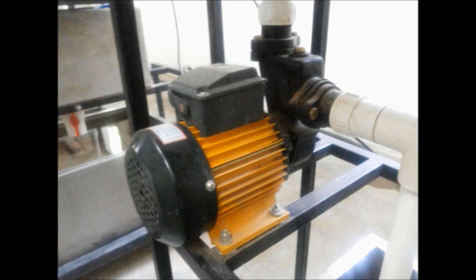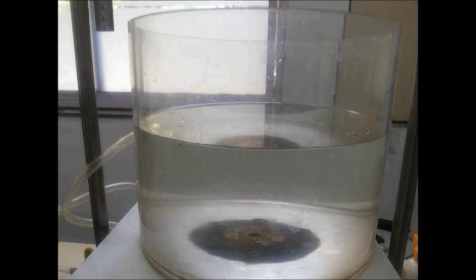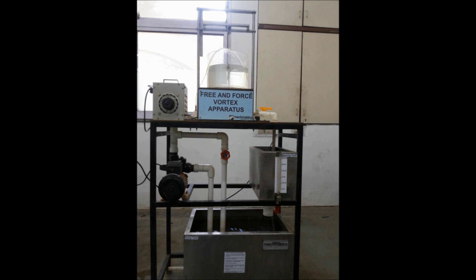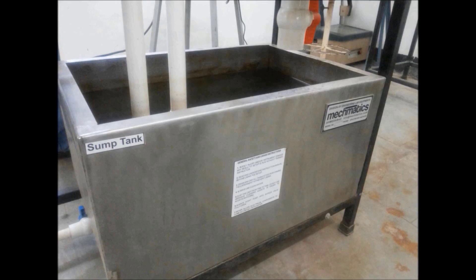Exit orifices of different sizes are provided which can be easily replaced. Starting from the bottom portion, let us first take the tank which is called the sump tank. This is the tank which can also be called a small reservoir. It is known as a small reservoir because the water is collected in this tank and also circulated through this experiment.